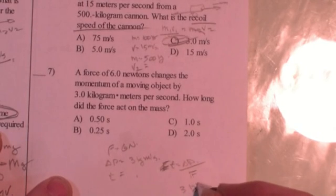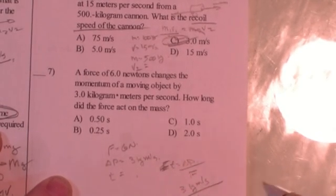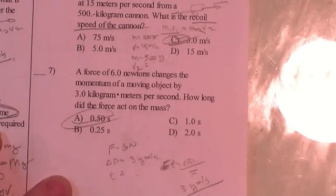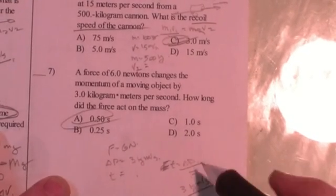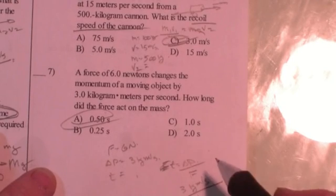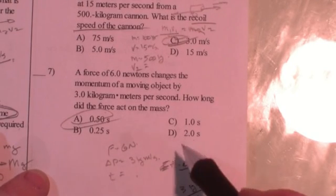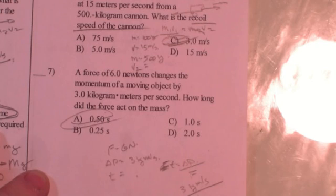So let's see. 3 kilogram meters per second divided by 6 Newtons gives me about a half a second. Now this is an example of where it's important to set up the equation and then plug in with units. Because it would be very easy to say, oh, 6 divided by 3 is 2 and go for the answer 2. You'd be wrong. But it would be very easy to do it if you were just doing the math in your head.